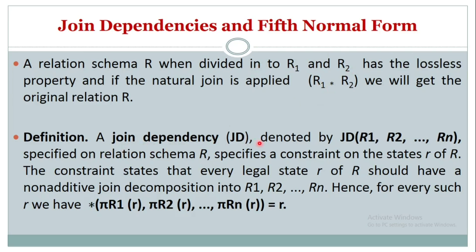Joint dependency is denoted JD(R1, R2, ..., Rn), where R is a relation schema and R1 through Rn are decomposed relations. The constraint states that every legal state of R should have a non-additive join decomposition — meaning if I decompose R into R1, R2, ..., Rn and perform a natural join, I should get the original relation back without any lossy data. That property is called joint dependency.